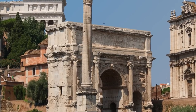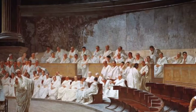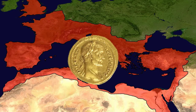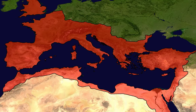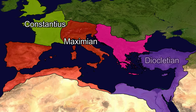A major change between the early empire and the late empire was the reduced importance of the city of Rome itself. Though the eternal city still held a highly prized symbolic value, from the rule of Diocletian onwards, emperors seldom visited Rome and rather chose to reside in cities closer to the frontier, such as Trier, Mediolanum, Ravenna, Nicomedia, or Constantinople. Another major change was that from the rule of Diocletian onwards, the Roman world generally had more than one emperor.